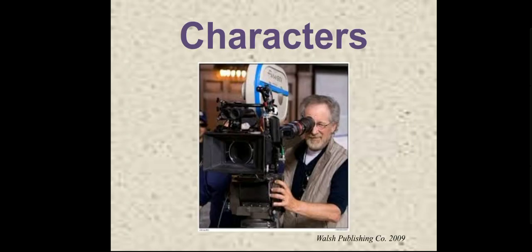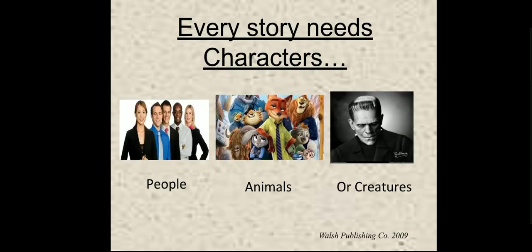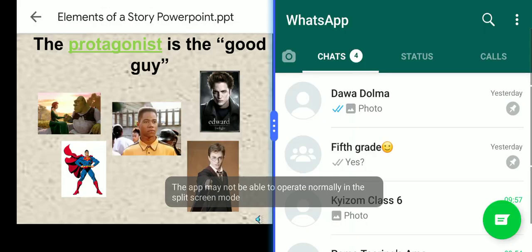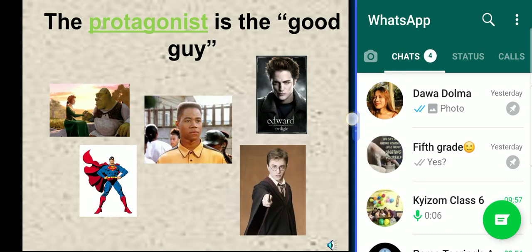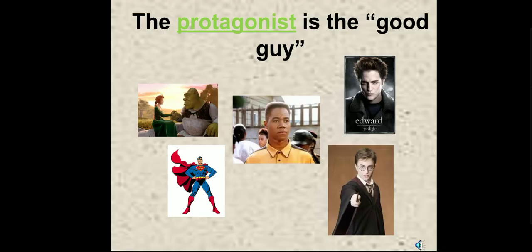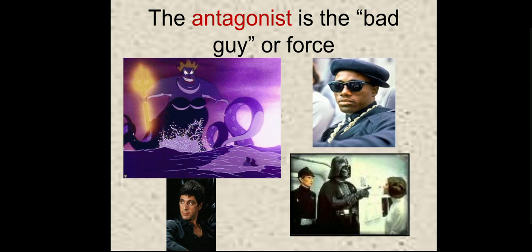Next, after setting, is character. What is a character? Every story needs characters. Characters can be people, animals, or creatures. What is a protagonist? The protagonist is the good guy in the story — we normally call them the hero. Protagonist is the literary term, so it's better if you know it. And for the villain, we use the term antagonist. The antagonist is the bad guy or force.